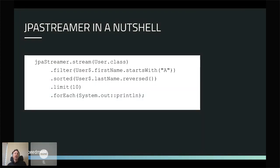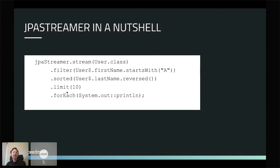Here's an example. I use the JPA Streamer instance and say I want a stream of users — where 'users' is a JPA entity class. I'm filtering out all users whose first name starts with 'A', then sorting by last name in reverse order, taking only the first 10, and printing them out. You might wonder what 'User$' is — I'll explain that a little later.